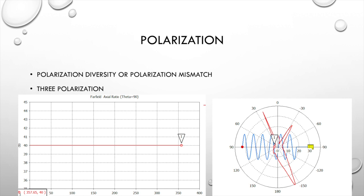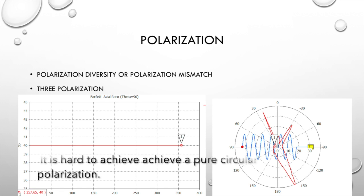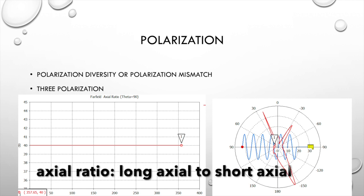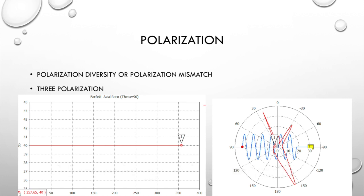There are three kinds of polarizations: linear polarization, circular polarization, and elliptical polarization. Linear and circular polarization can be regarded as two special cases of elliptical polarization. However, it is hard to achieve pure circular polarization — normally we get elliptical polarization. When the axial ratio is smaller than 3 dB, we can regard it as circular polarization.